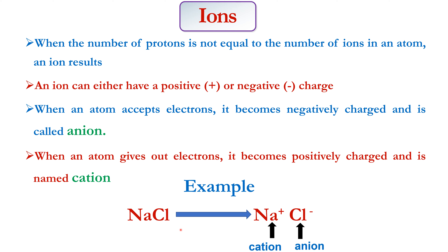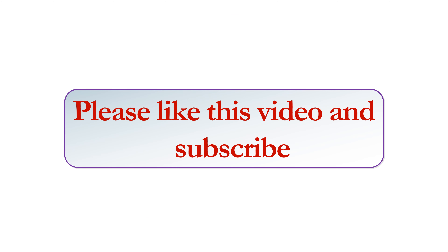For example, sodium chloride is made up of sodium with a positive charge and chlorine with a negative charge. Sodium with a positive charge is known as a cation, while chlorine with a negative charge is known as an anion. So a cation is positively charged while an anion is negatively charged. That's where today's lecture ends — please like this video, subscribe, and I'll see you in the next lecture.